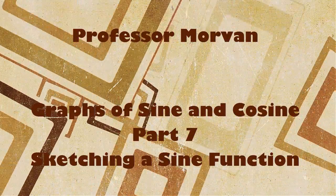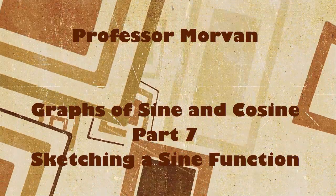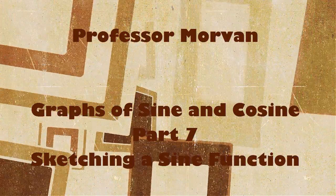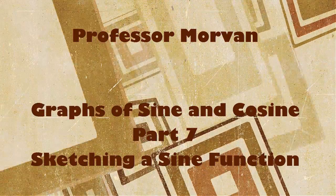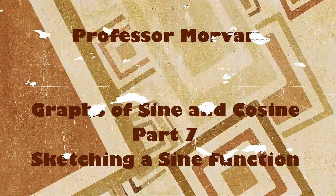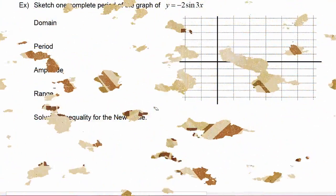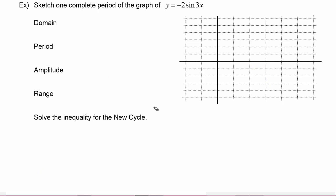In part seven of our lesson on graphs of sine and cosine, you will be sketching a sine function. In this example we have to sketch one complete period of the graph of y is equal to negative two sine of three x.